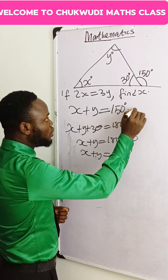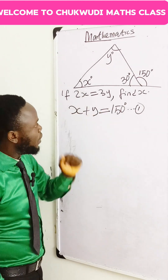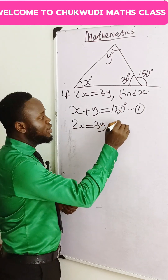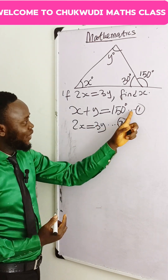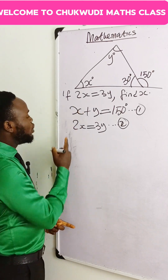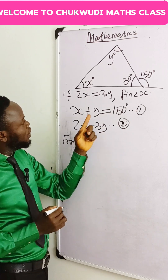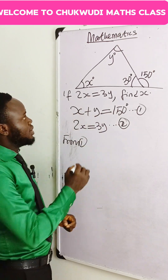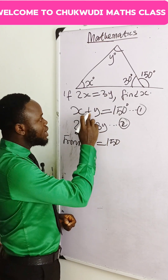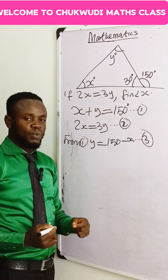Then you see that whichever method you apply will give you the same equation. We can call this equation 1. From the given information, we have that 2x is equal to 3y — let's call this equation 2. We can now solve equations 1 and 2 simultaneously using the method of substitution. From equation 1, since we are looking for x, let's make y the subject: y is equal to 150 minus x. We can call this equation 3.